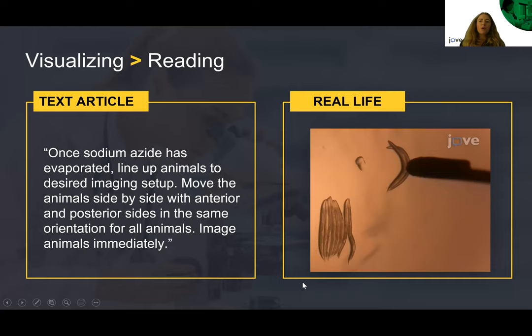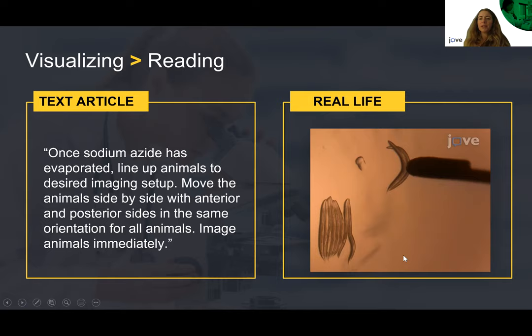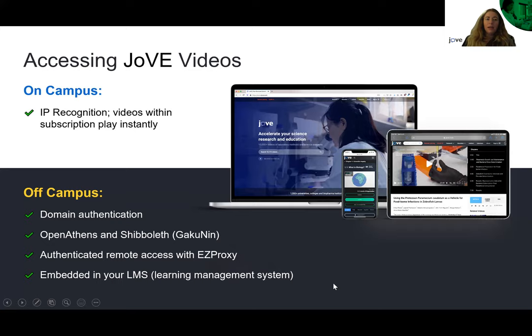Why is visualizing science so important? Even as a scientist, when you're trying a new technique or starting out in a new field, it can be really complicated to grasp exactly what an experiment should look like. For example, if we take part of a text article on the left-hand side describing how to line up C. elegans worms for an imaging experiment, even as a scientist it can be quite hard to picture what this is going to look like. But if we add a still image on the right-hand side, we already get a much better picture. With videos, we can fully explain how a scientific protocol works and how you can check that you're doing it correctly.